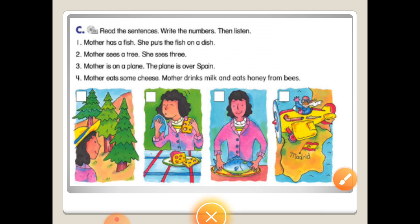Now read the sentences, write number, then listen. Of course here we will read the text above and make numbers. Number one: mother has a fish, she puts the fish on a dish. Okay.